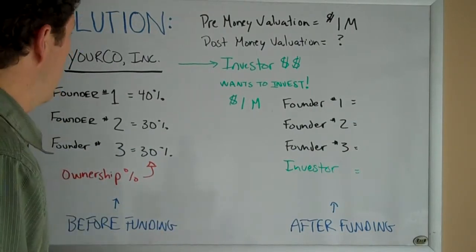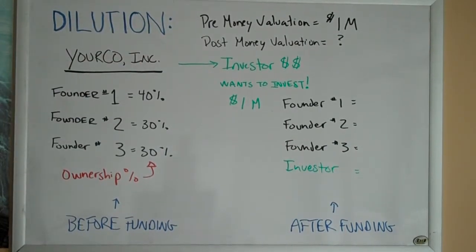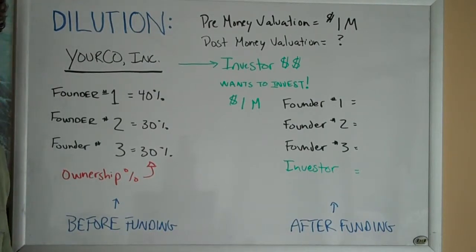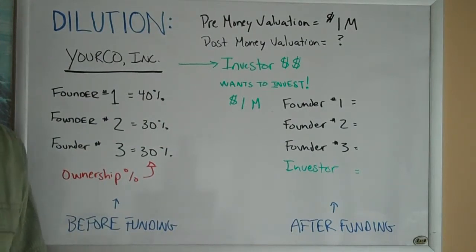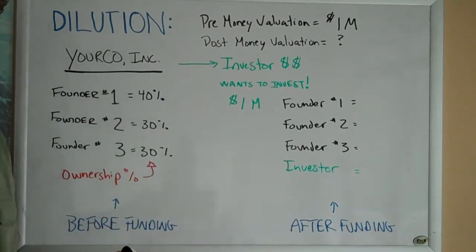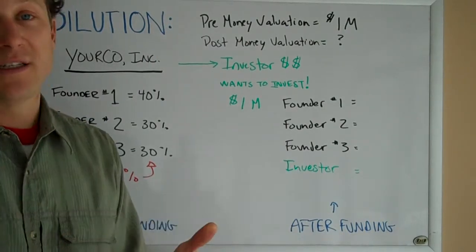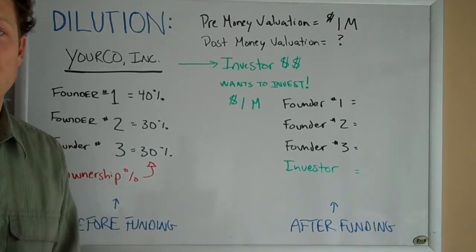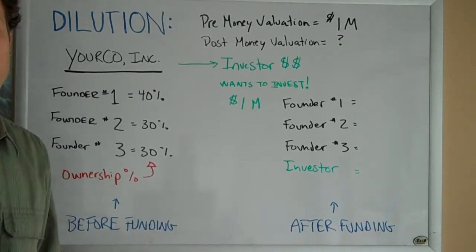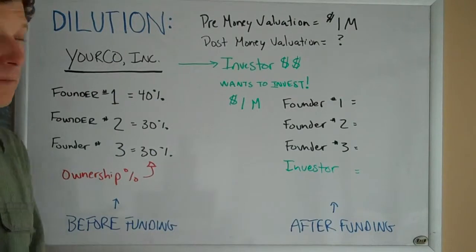Let's start with pre-money and post-money valuation — these are two important concepts as an entrepreneur that you should understand. Pre-money valuation is the value of your company before you raise funding. Post-money valuation will be the resulting value of your company after you raise money. A simple way to think about it: if your company is worth a million dollars before you raise funding and you raise a million dollars, you get the post-money value by adding your pre-money valuation with the amount of money raised.